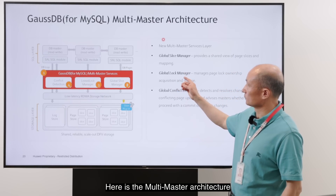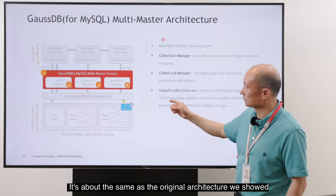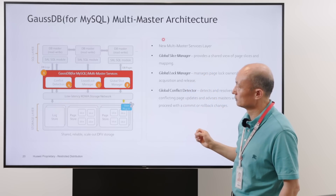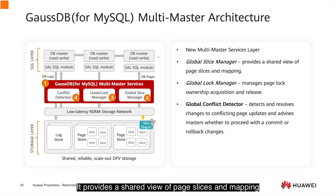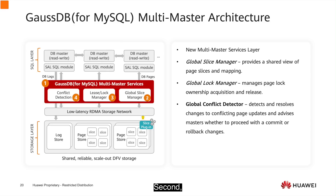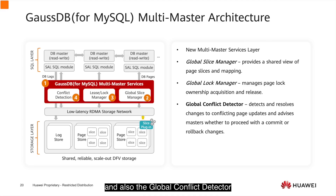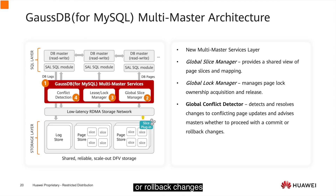Here is the multimaster architecture. The overall architecture is about the same as the original architecture shown in previous episodes, with only the new multimaster service layer added. The multimaster service layer has three main components. One is the Global Slice Manager, which provides a shared view of page slice and mapping. Second is the Global Log Manager, which manages page log ownership acquisition and release. Third is the Global Conflict Detector, which detects and resolves conflicting page updates with additional information, advising the master whether to proceed with the commit or roll back changes.